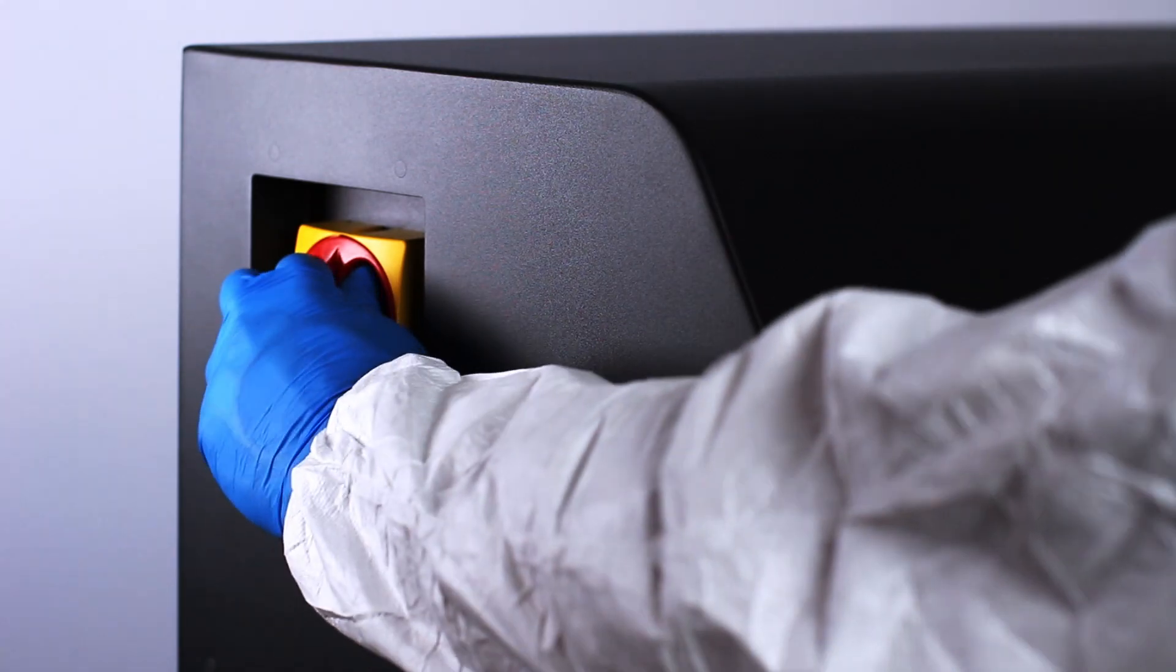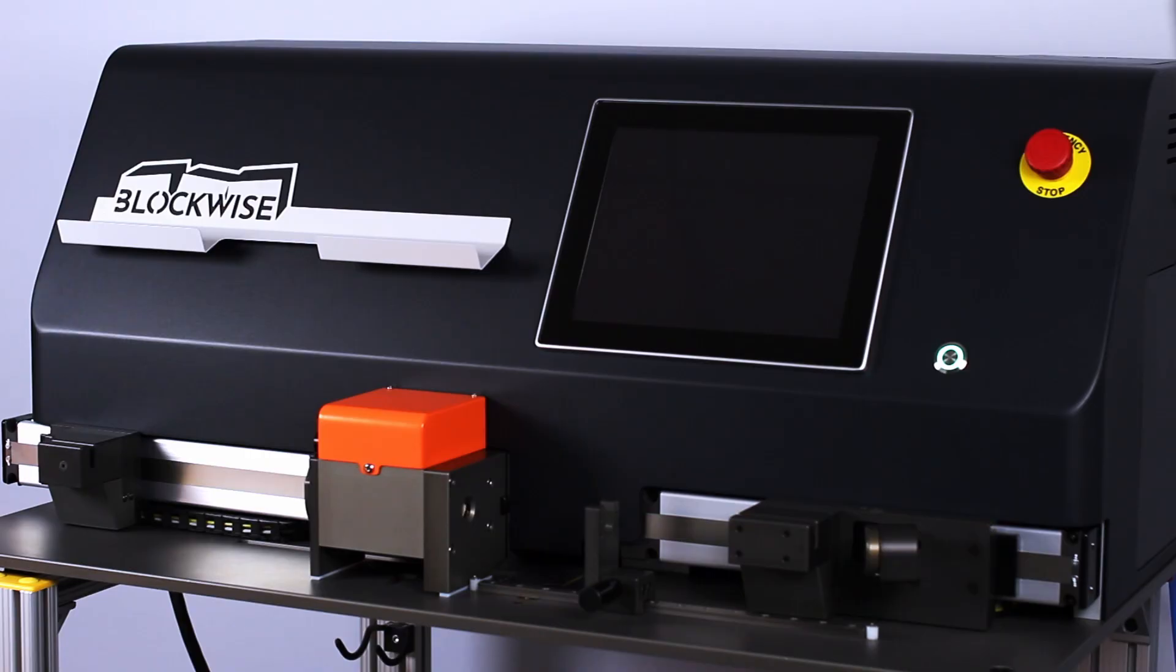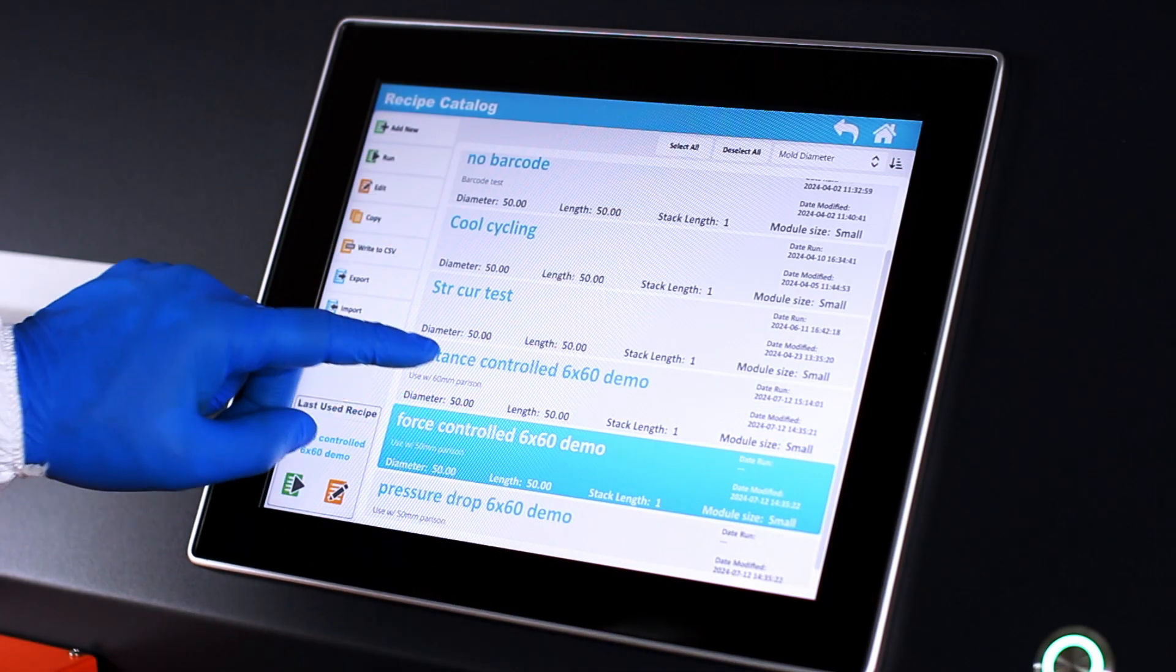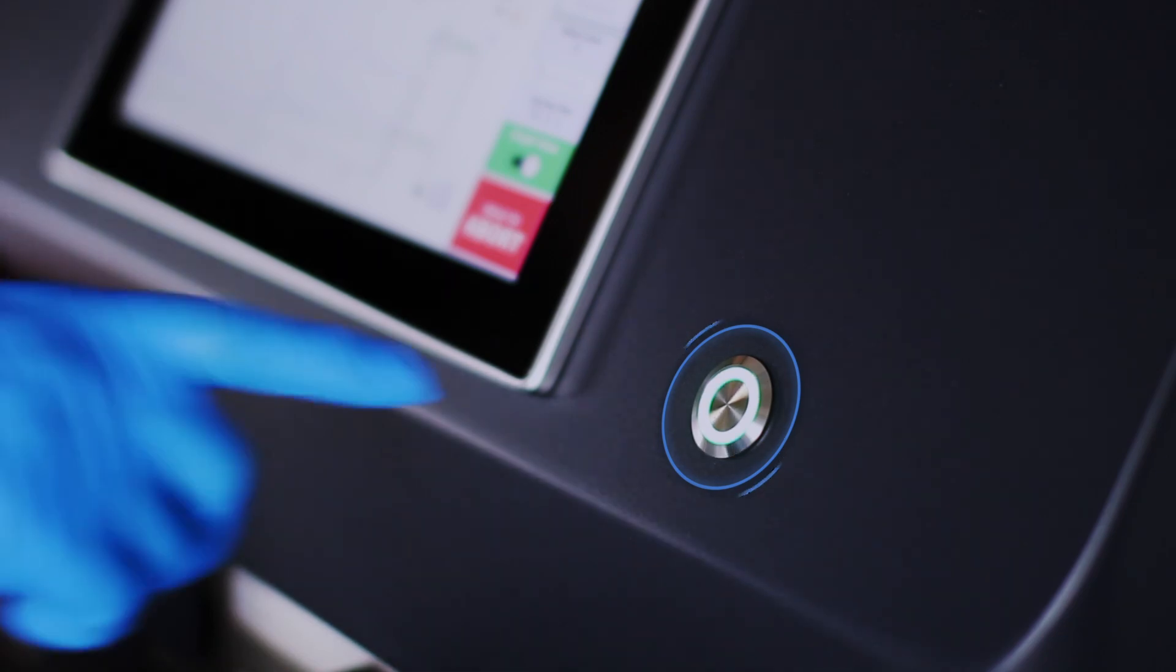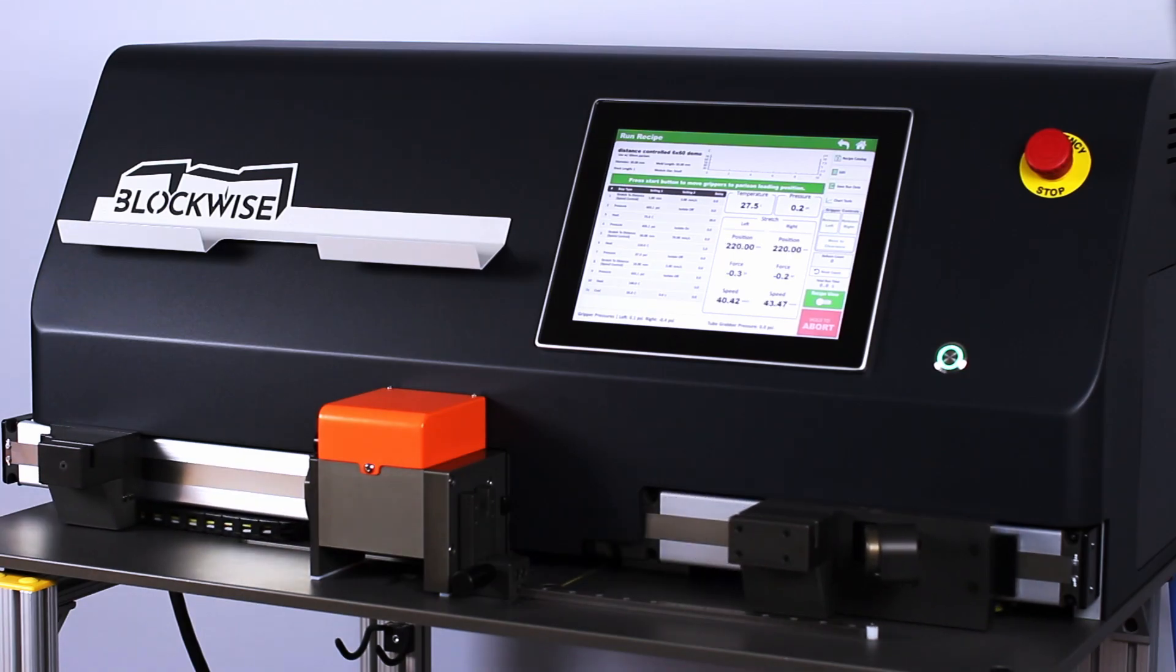With the tooling setup complete, the machine is ready to run a balloon forming cycle. Open the desired recipe on the run screen and press the start button to move the grippers into the loading position.